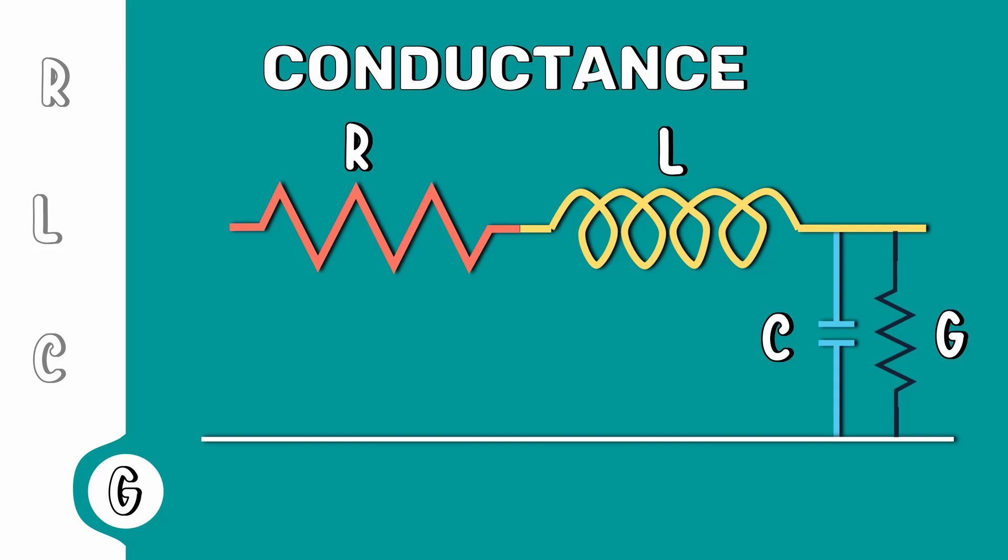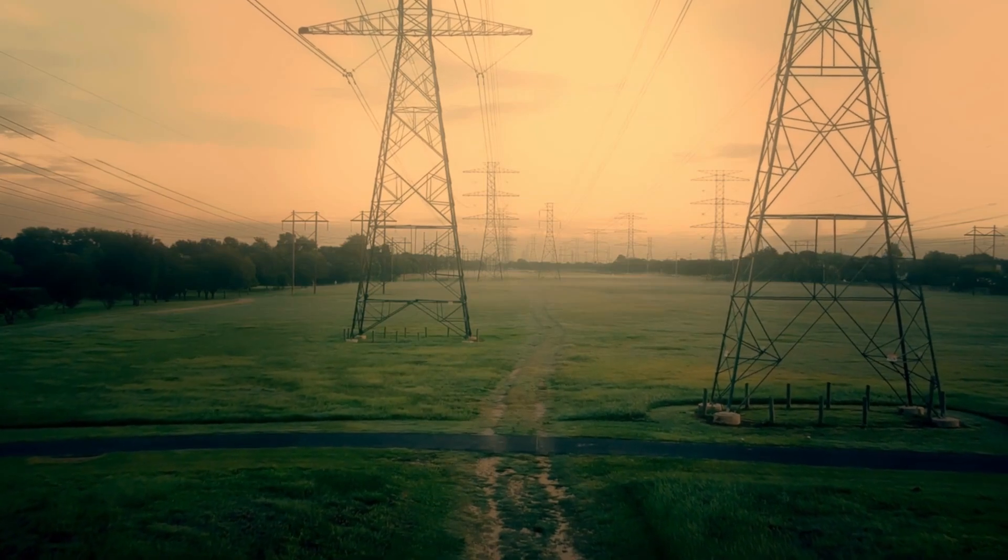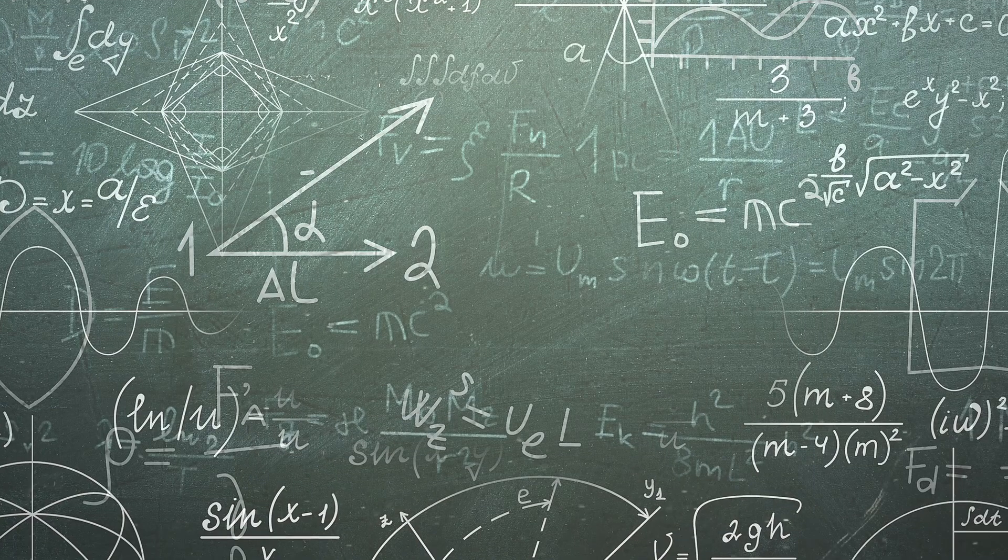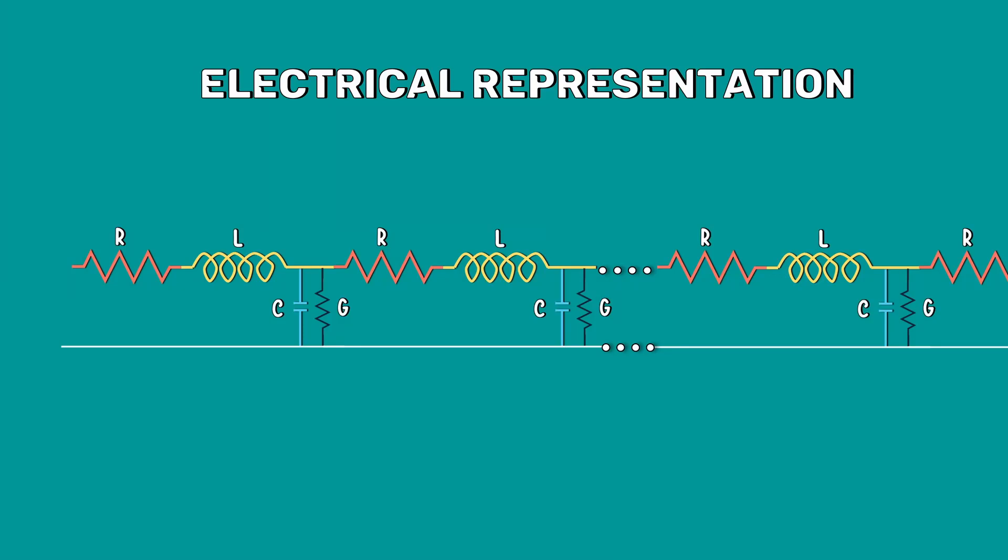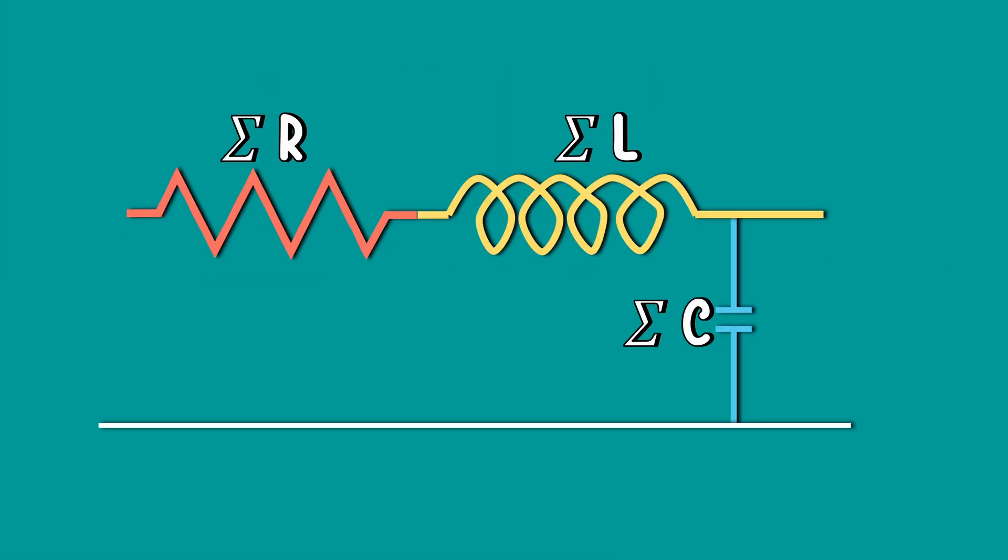The shunt conductance is almost always eliminated in overhead transmission lines. The performance of the transmission line can be analyzed conveniently if distributed parameters are considered lumped.